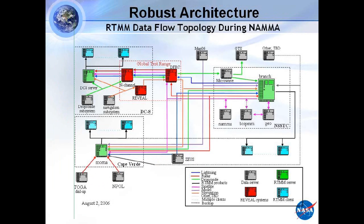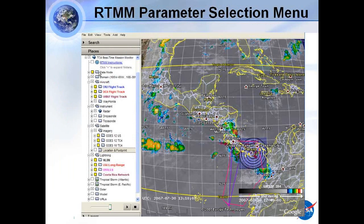Here's a screenshot of a typical Google Earth display using the real-time mission monitor. Along the left-hand side you see the menu selection — a series of menus that open up with point-and-click. Here you can see a flight track and a radar image from TC4. This is Costa Rica, and you can see there's lightning data.